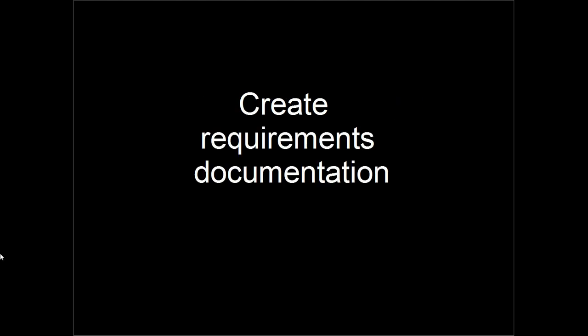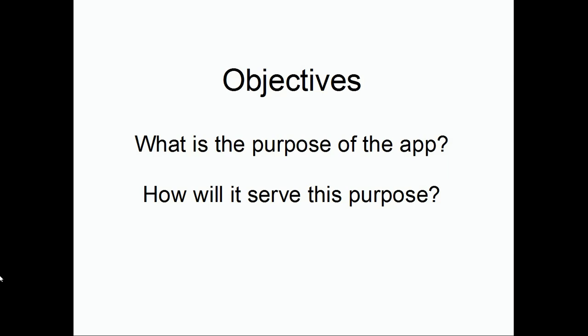Even when the client has provided requirements in written form, it's a good idea to create your own version. The first section of a requirements document should ideally capture the objectives of the project. What is the purpose of the application, and how will it serve this purpose? Great applications have a focused purpose, so ask the question: what will this app be great at? Identify the essential goals and keep them simple.